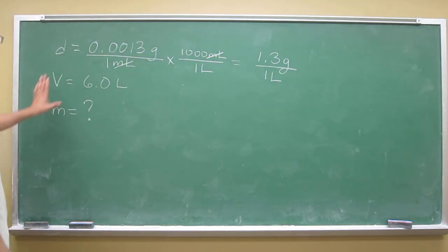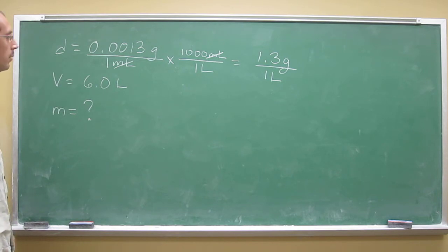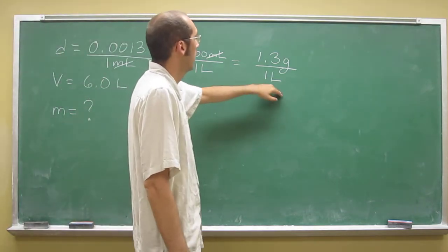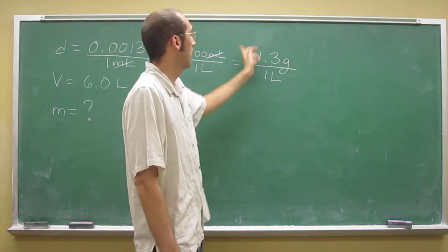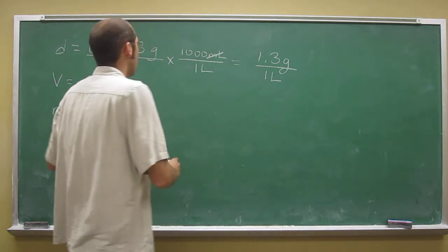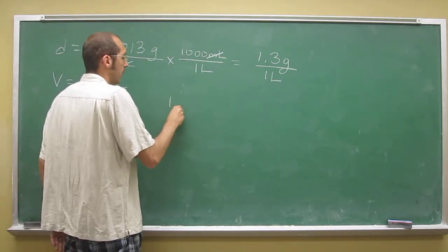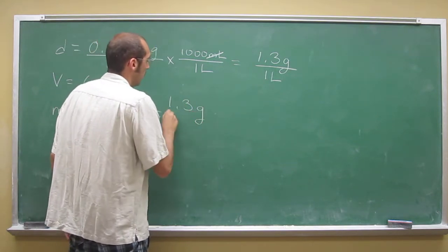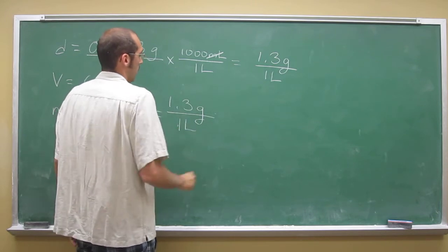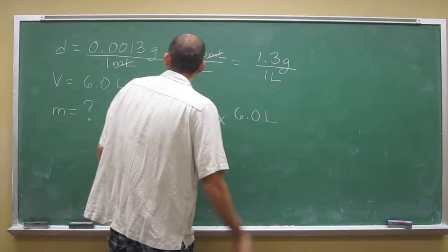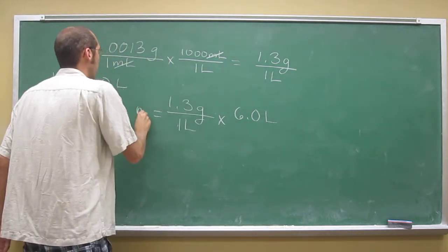So we know the volume of this sample too, and we're looking for the mass. So if we've got liters here and we've got liters here, if we cancel those out, we'll get the mass here. So let's just do that before I go on. So this is to say you get the density, right? Density equals 1.3 grams per one liter, and then you multiply that by six liters, or this is how you get the mass this way.